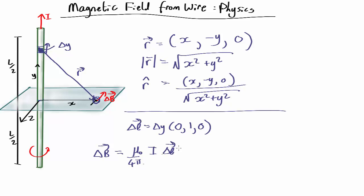And the Biot-Savart law says it's I delta l cross product with r hat, all over mod r, which is x squared plus y squared.